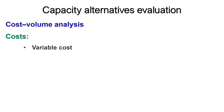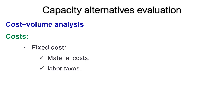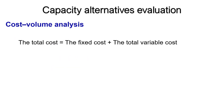Variable costs vary directly with the output volume. The major components of variable costs are generally materials and labor costs. The total cost associated with a given volume of output is equal to the sum of the fixed cost and the total variable cost.